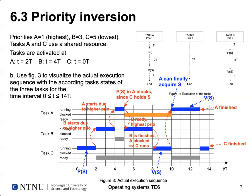Task A has the highest priority so it gets the CPU, runs one time unit, then tries to acquire the semaphore. Here is where the problem starts: the semaphore is still held by task C, which needs three time units to finish its critical section. Task A cannot continue and must block waiting for the semaphore. The next available task is B, which runs its remaining three time units.